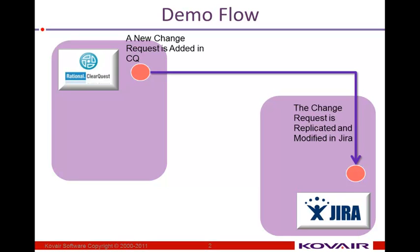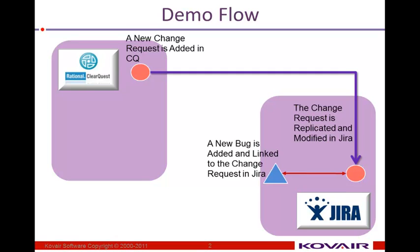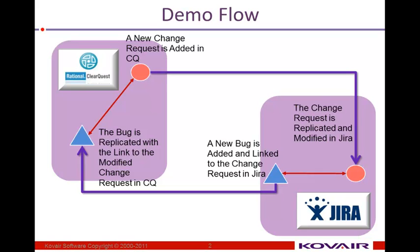When that has been implemented, say there is a new bug created in Jira, and that bug will be linked with the replicated change request. Using the same Covair Omnibus, that bug will be replicated back to ClearQuest. Not only just the bug, but also all the changes made in the change request will be synchronized back to ClearQuest, and also the linking between the bug and the change request will go back to ClearQuest. So that is the demo flow we'll be using in the actual demonstration.